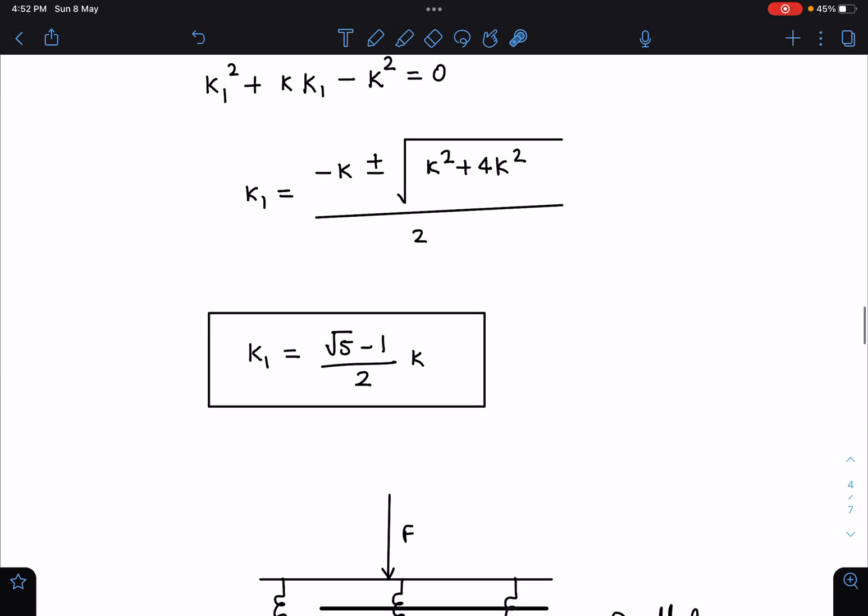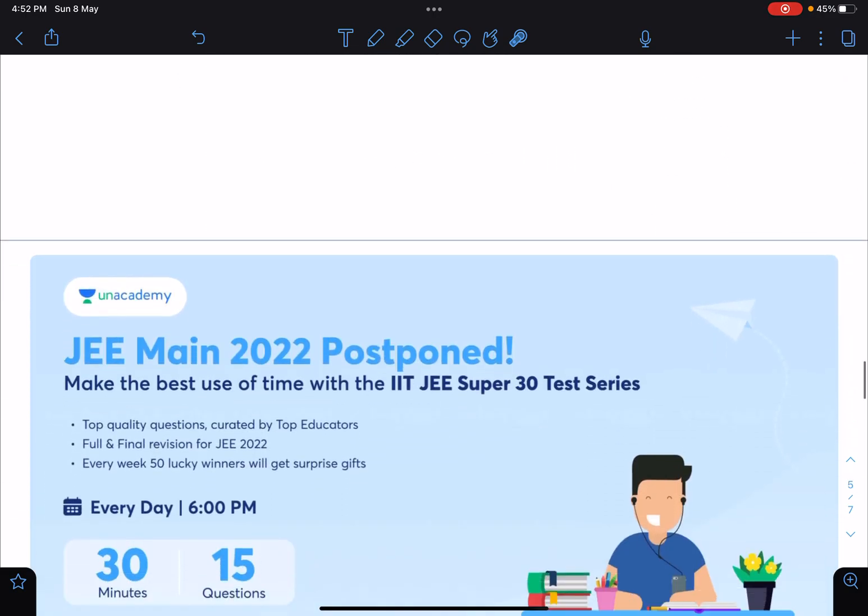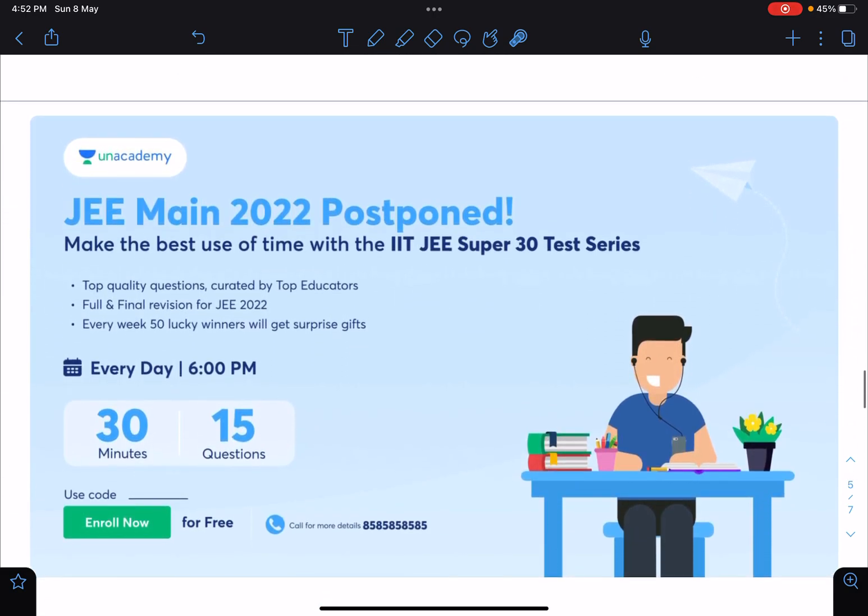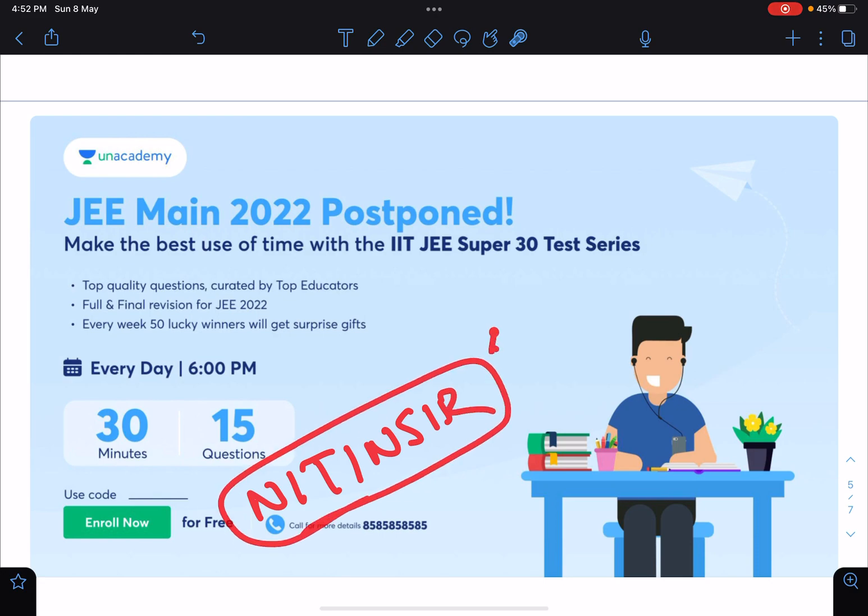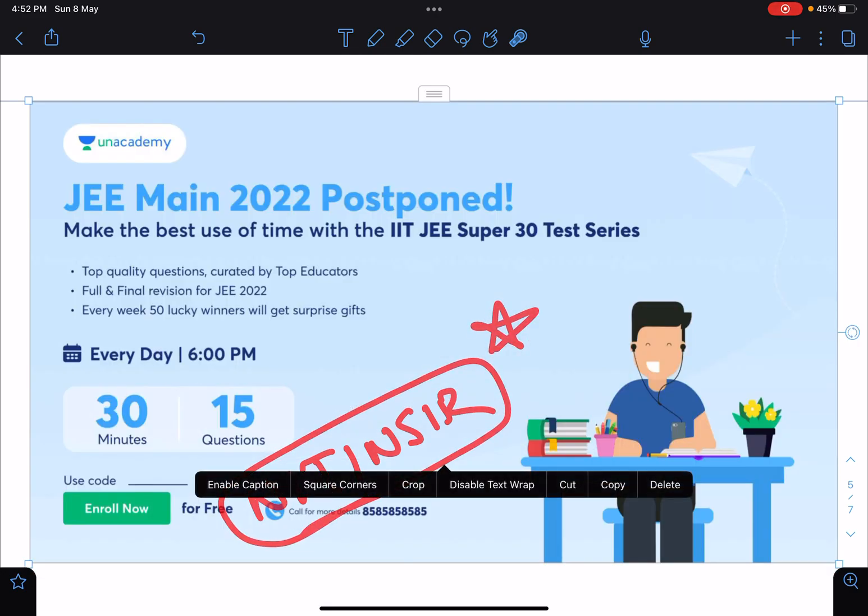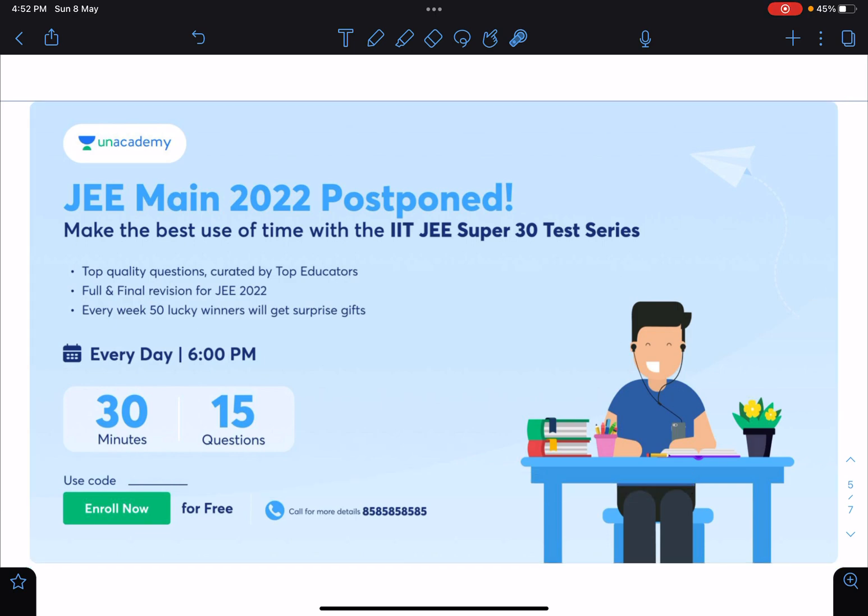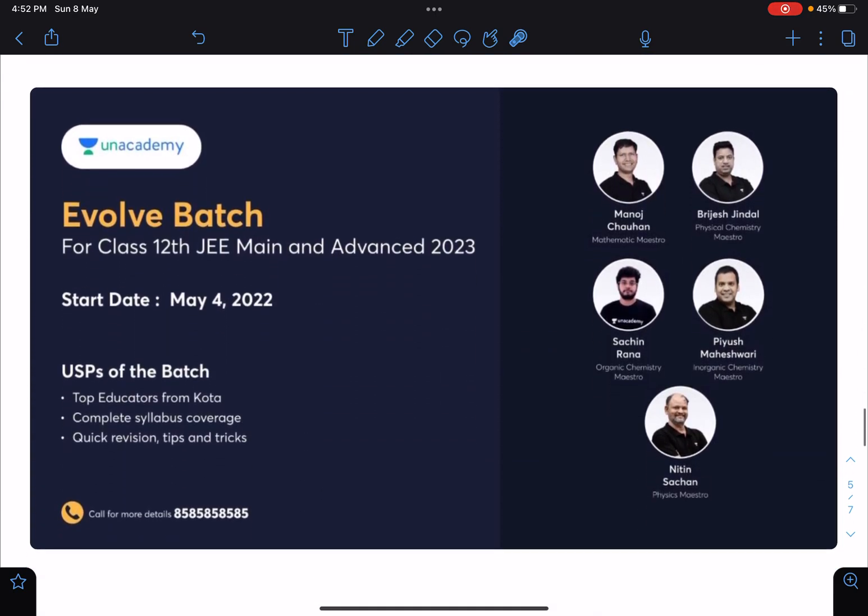For JEE Mains 2022, every day at 6 PM you can have a small quiz or test: 30 minutes, 15 questions. You can enroll in this and use my code 'nitinsir' to enroll on Unacademy if you are new. A new batch has recently started.